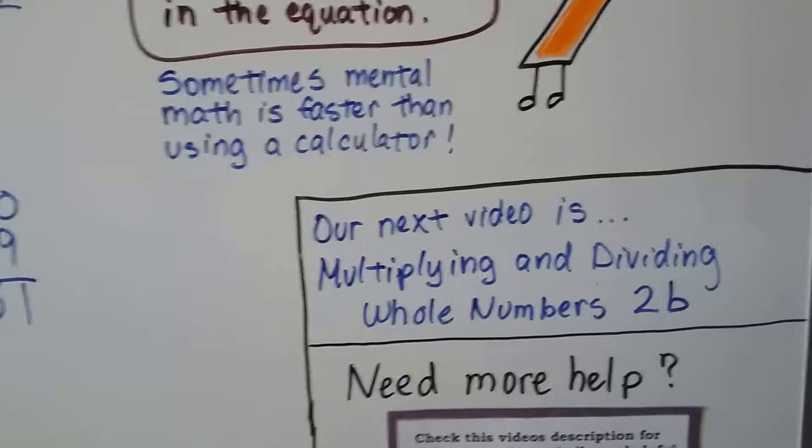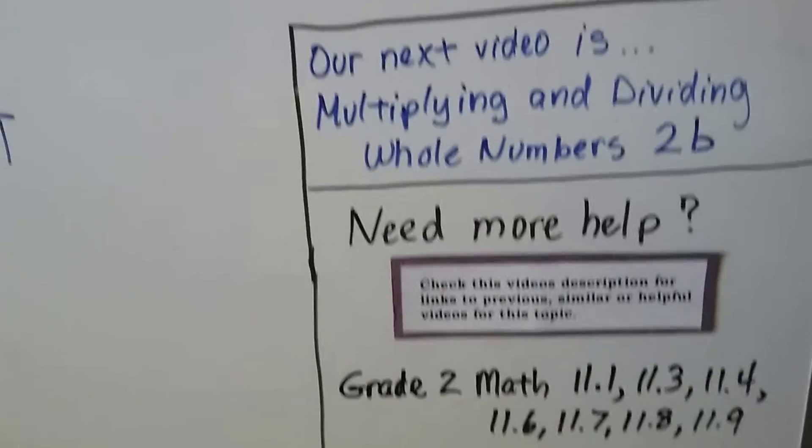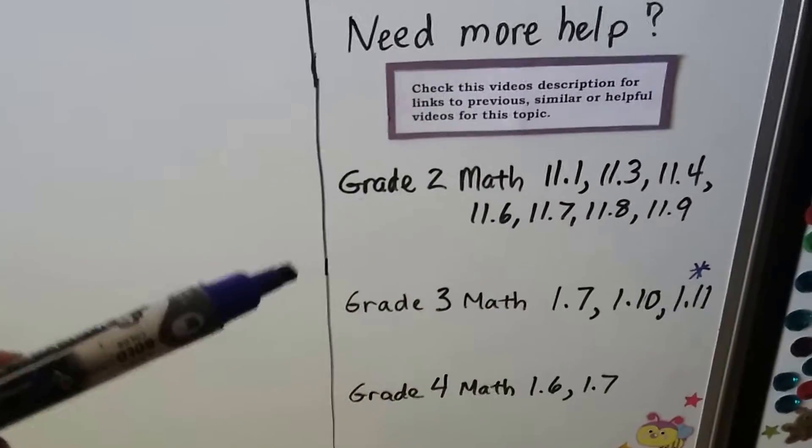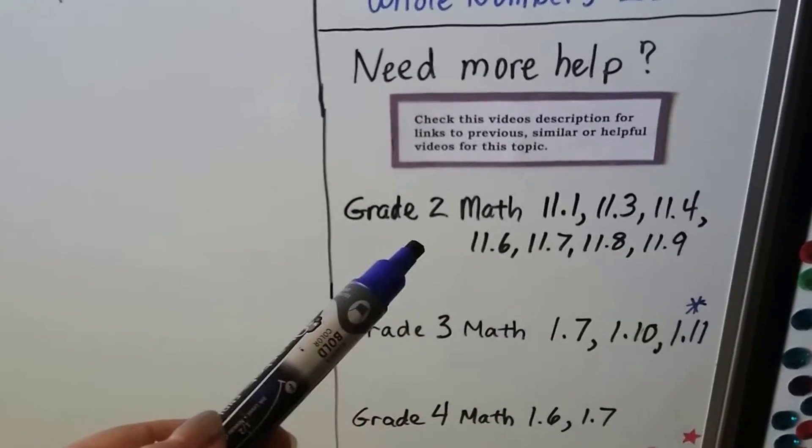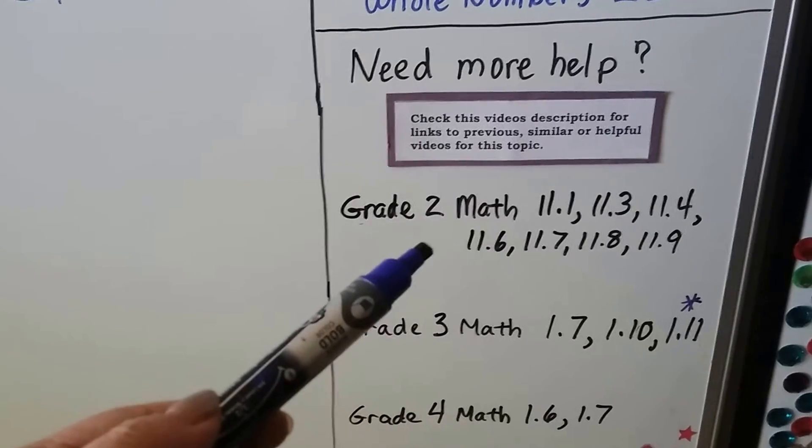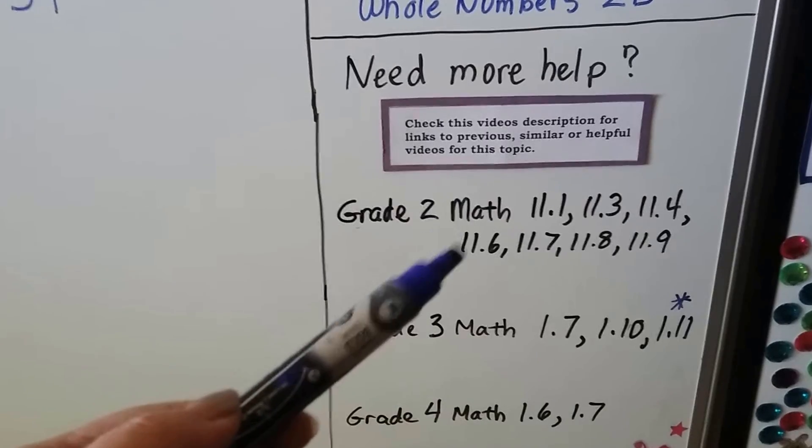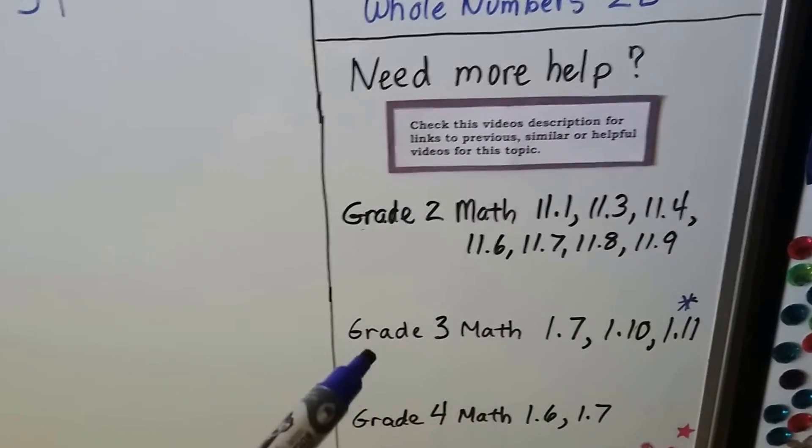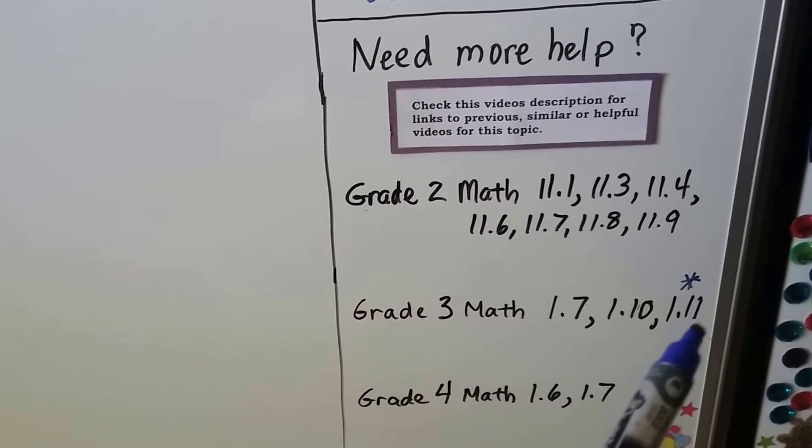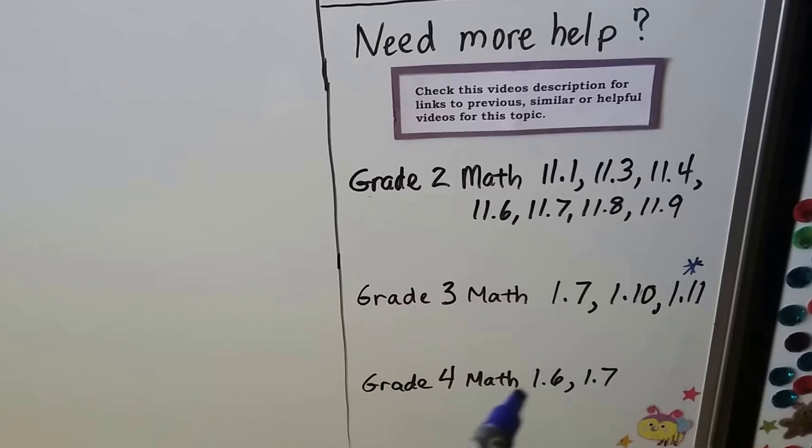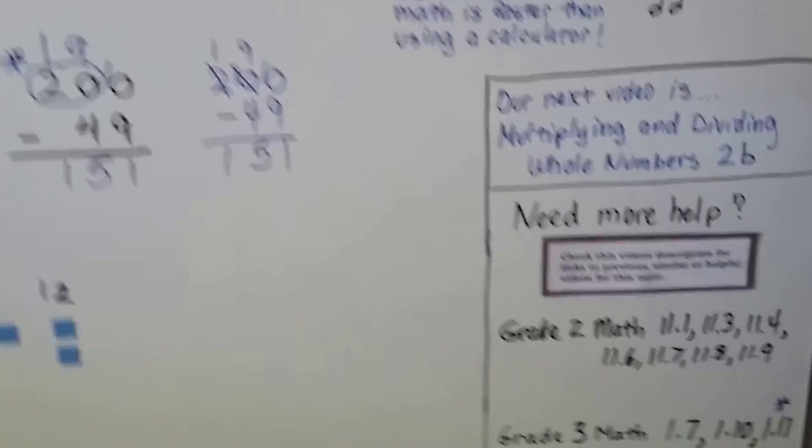Our next video is multiplying and dividing whole numbers, and we'll be regrouping them. That's lesson 2b. If you need more help, always check the description of the videos. There's going to be addition and regrouping help and subtraction and regrouping help from grade 2 math with some basic three-digit numbers. And grade 3 math, same thing. And here's that combining place values 1, and even grade 4 math videos 1.6 and 1.7. So there'll be links to those in this description.